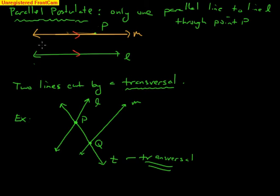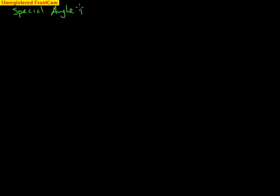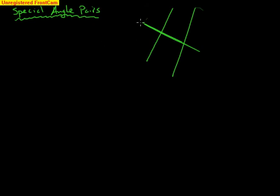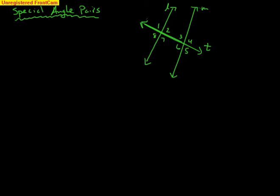Now we're going to look at the different angle pairs formed by two lines cut by a transversal. Let me draw a nice picture. Here are my two lines cut by a transversal — line L, line M, and transversal T. Let's label the angles one through eight. We're going to talk about four types of angle pairs, and we'll do them in different colors.